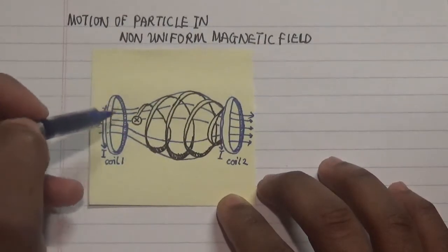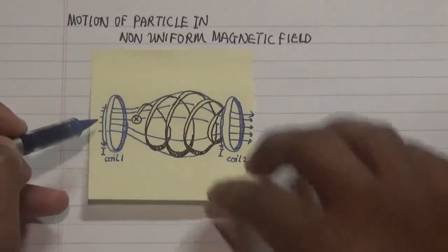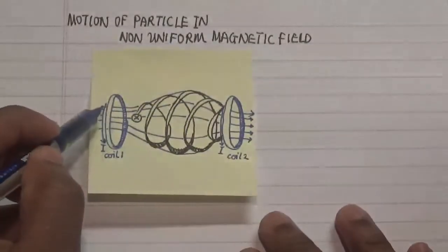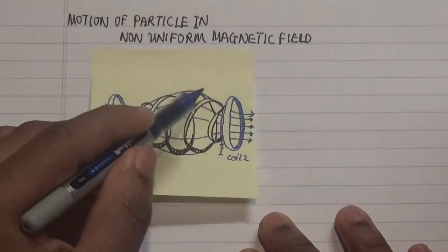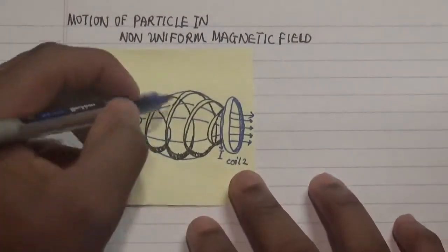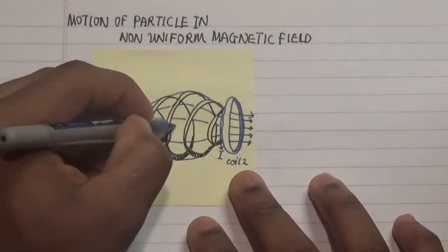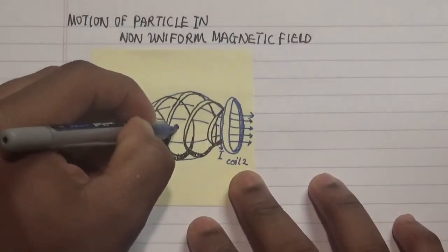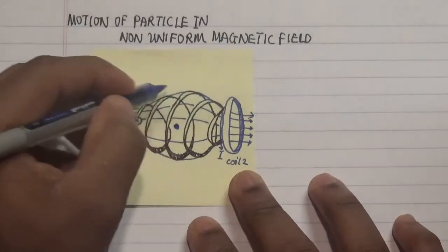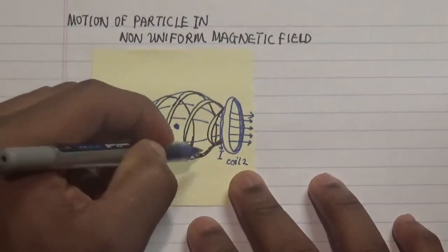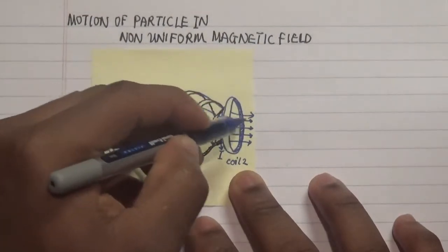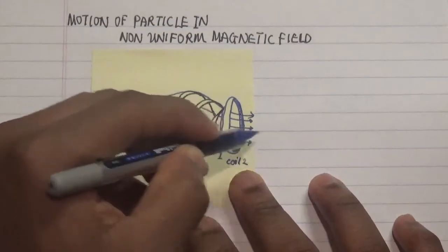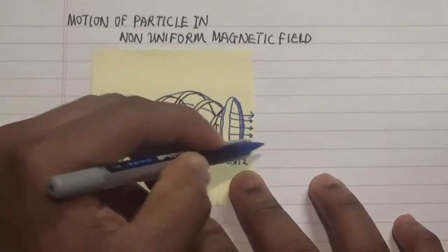The non-uniform magnetic field has this motion moving in one direction, and then you get to the midpoint where we see a significant bump, and then the field continues to the other side.